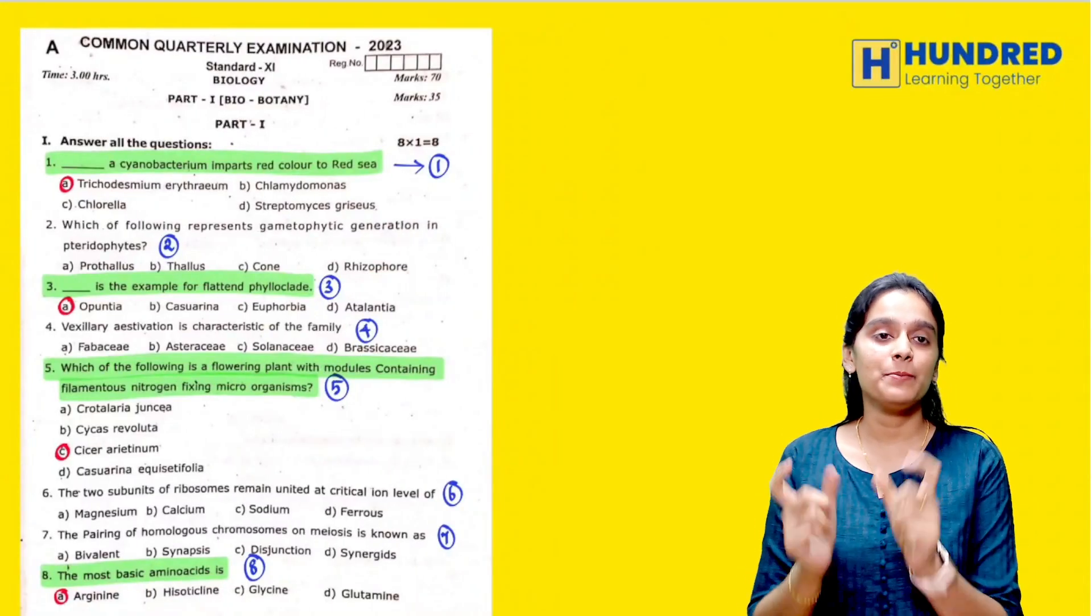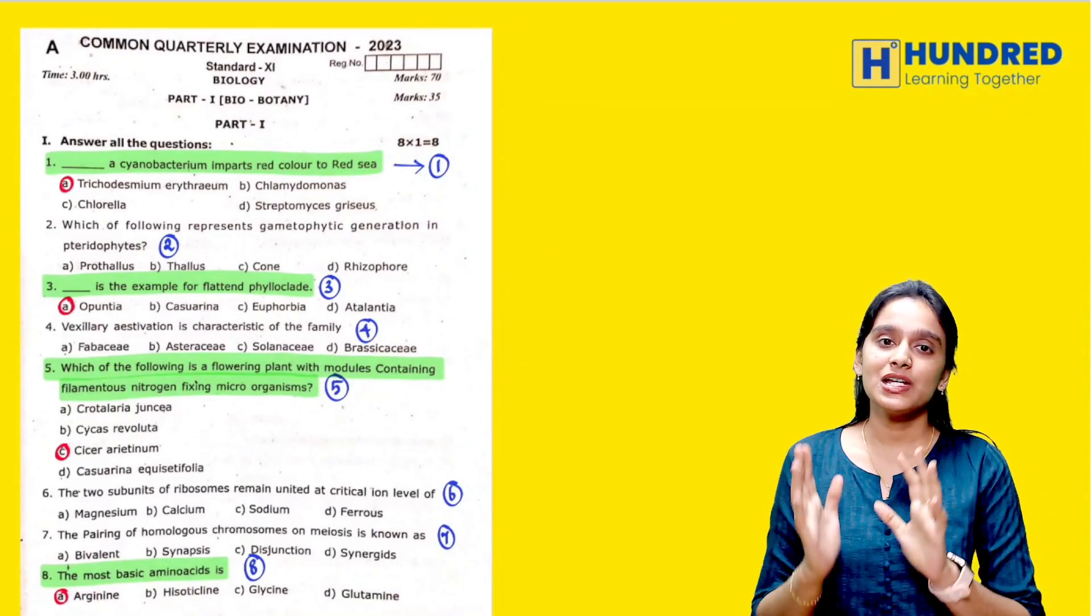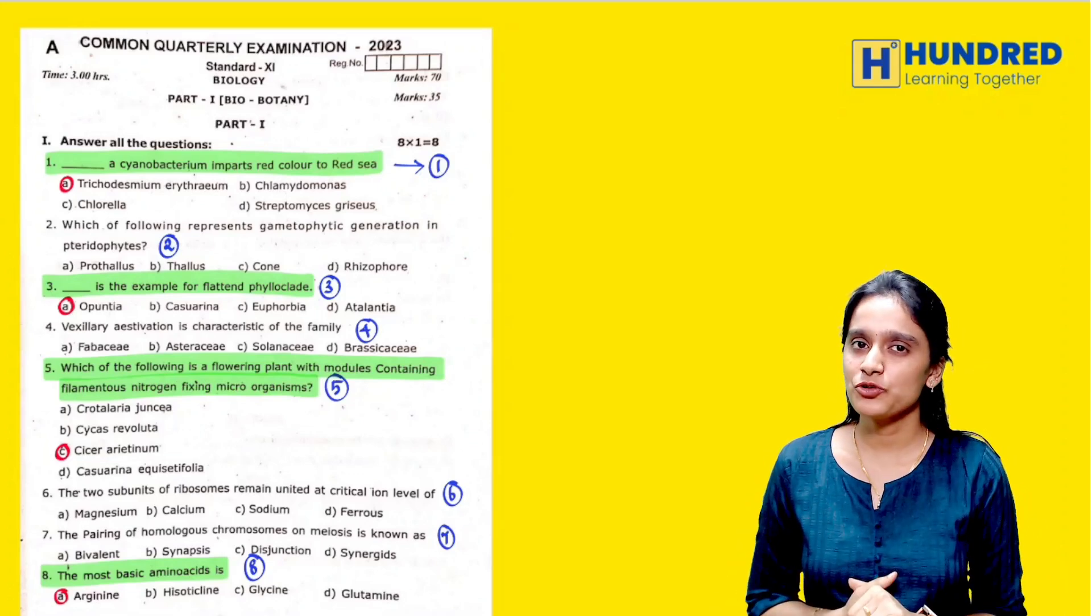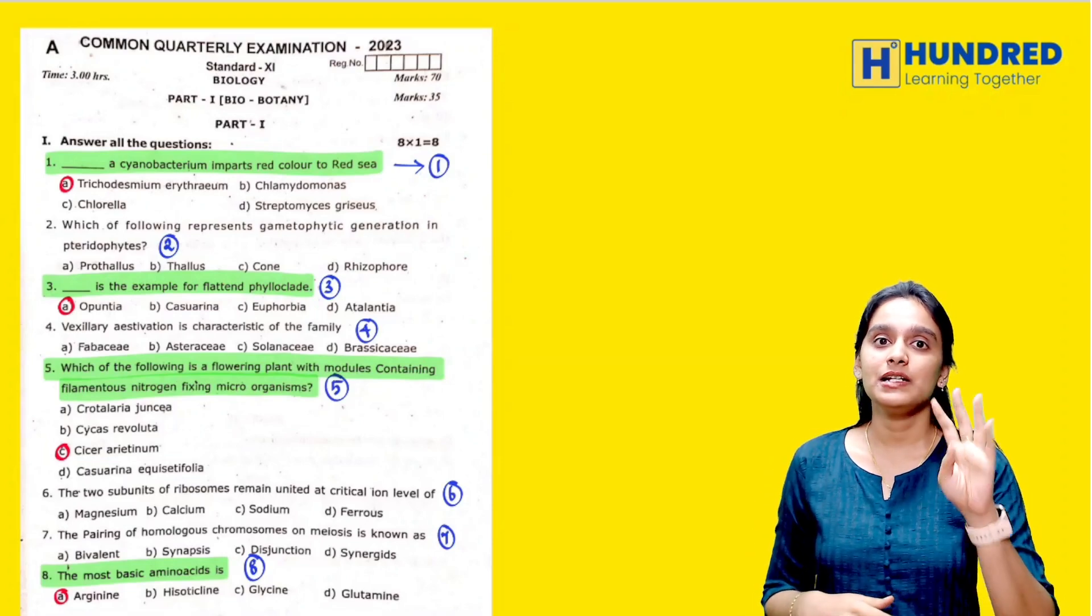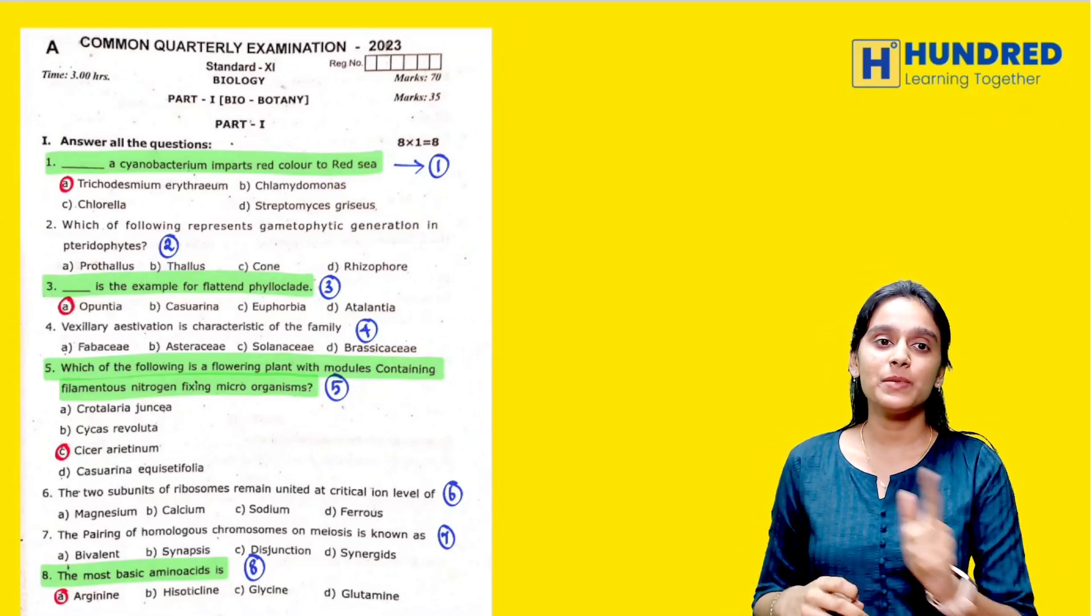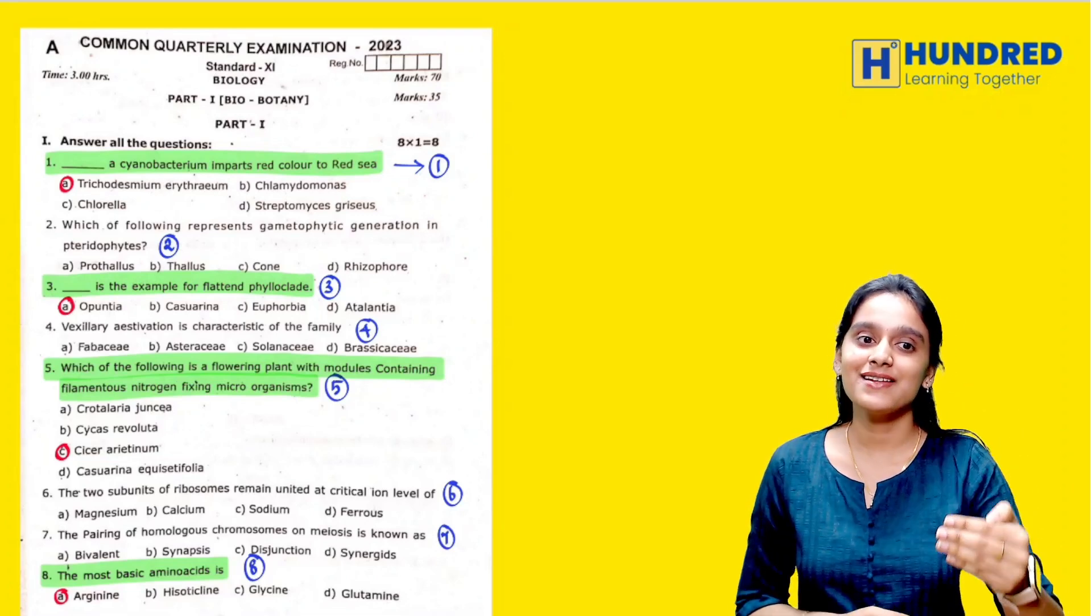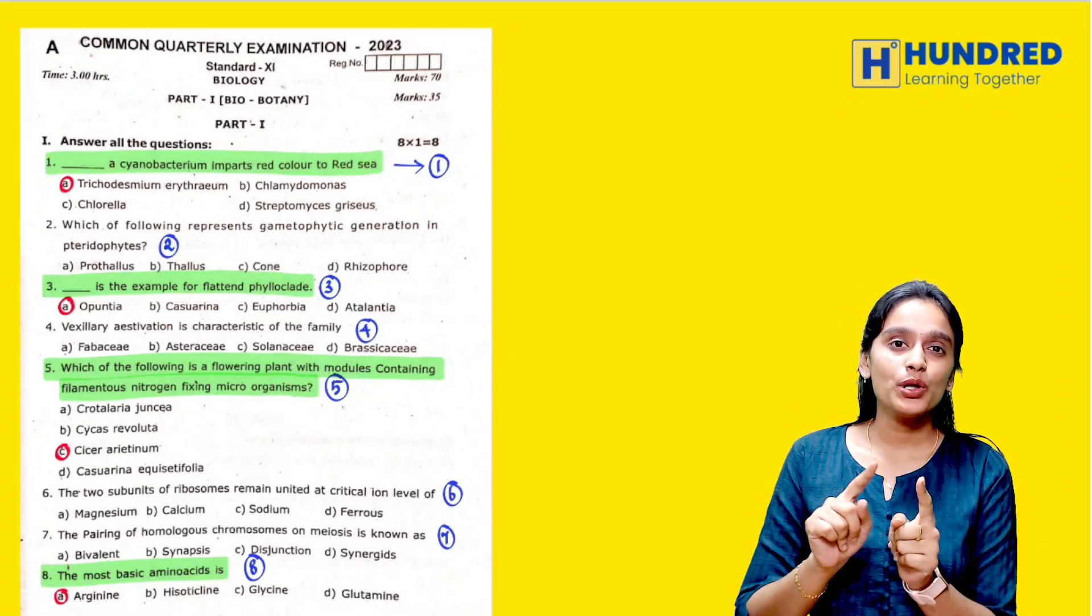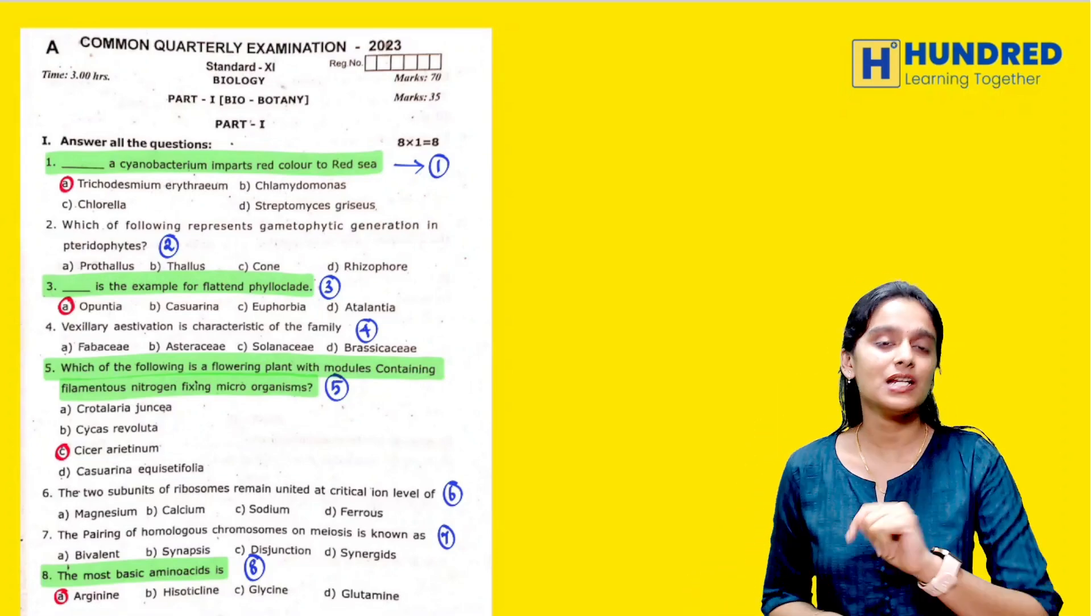So first, let's look at our Biobotany Part 1. You will have 8 questions, one question from each of the first 8 chapters. And if you look at this, there are 4 interior questions. Highlighting the 4 questions that are the interior questions, so you will see how the correct answer is marked. You will see how the book back questions are, and in the next chapters, you will see how the side is mentioned.